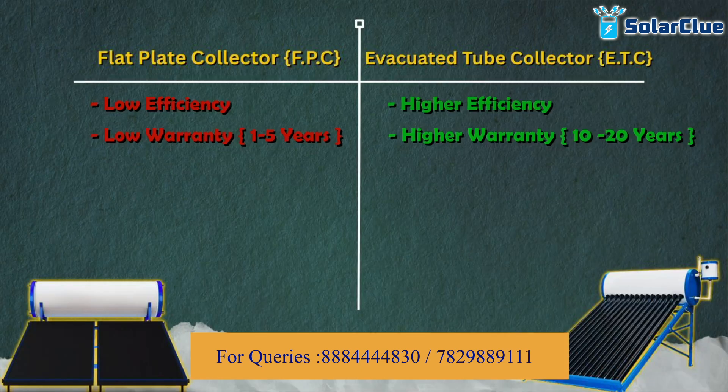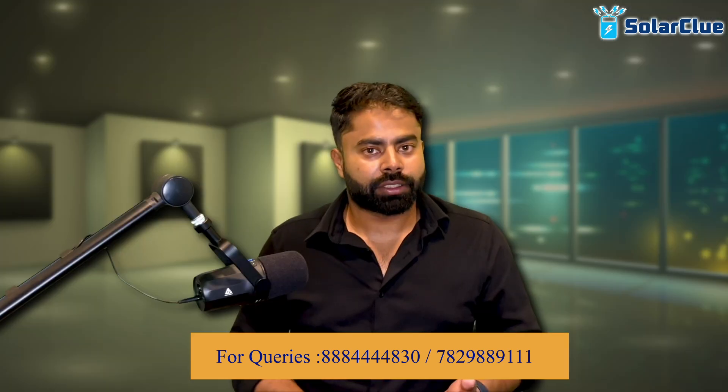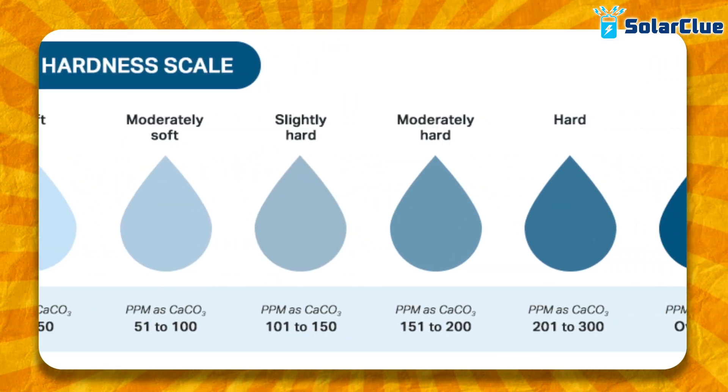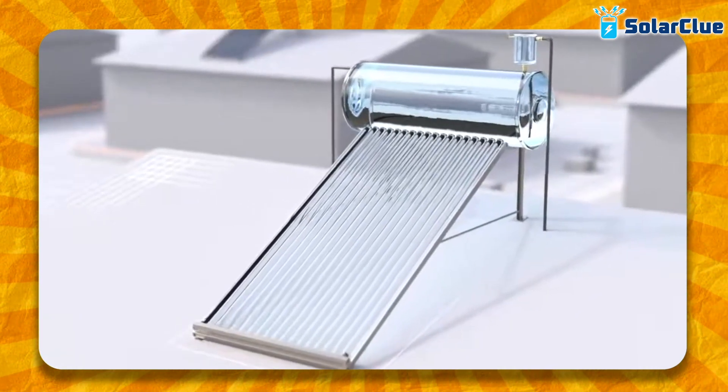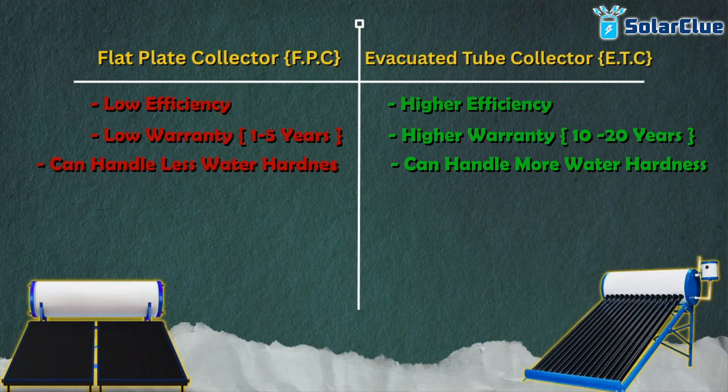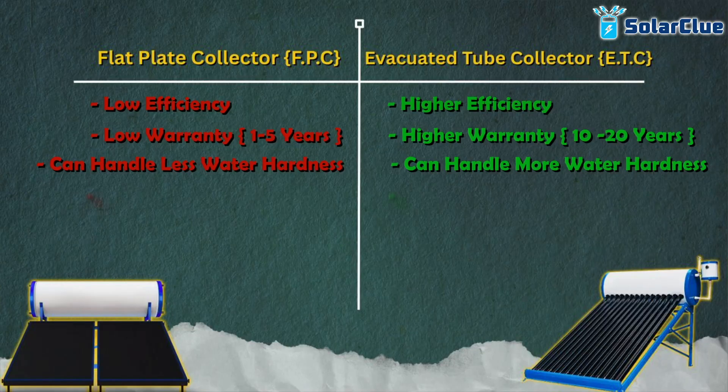The tubular model can handle higher water hardness — up to 2000 ppm — whereas the panel model can handle only up to 600 ppm. Water hardness, meaning the salt content in your water, is the biggest enemy of solar water heaters, so higher hardness tolerance is a major advantage. The tubular model is also less expensive — roughly half the price of a panel model. So in most respects the tubular model is superior.